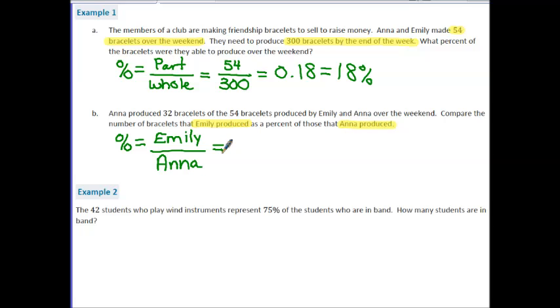Now, they did tell us the number that Anna produced was 32 bracelets, so we know 32 is going on the bottom. They didn't specifically tell us the number that Emily produced, but they told us the total number they produced together was 54. So that tells me I need to take 54 and subtract out the number that Anna produced, and that will leave me with what Emily produced, and that number is 22. So the number Emily produced goes on top here with 22. When I divide those two numbers, I get 0.6875. Now, turning this into a percentage, we're going to move the decimal over twice. So this is equal to 68.75%. So notice percentages, you can have decimals.